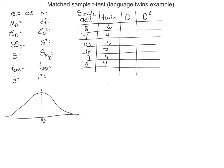There is some evidence indicating that children with no siblings develop language faster than twins. To test this, a researcher provides a language development assessment to a group of twins and to a group of children with no siblings.